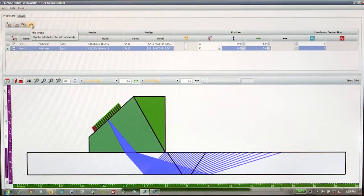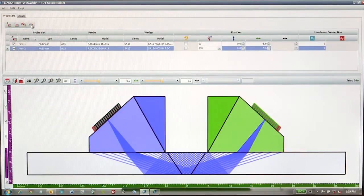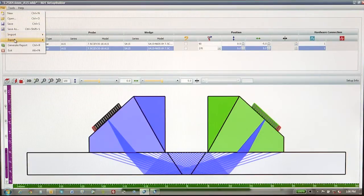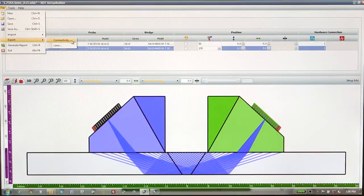The inspection is performed from both sides of the weld using two probes perpendicular to the weld line and secured at the predetermined position in the scanner relative to the weld centerline. This scan plan along with the probe, wedge, and beam parameters are typically included in a technique sheet that is included with the inspection report.